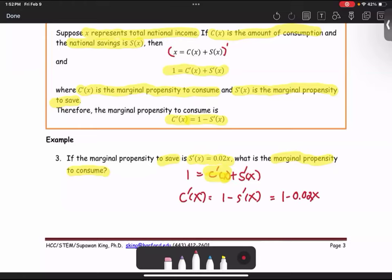These two terms are not like terms. We already get the answer in the form of 1 minus 0.02X as the marginal propensity to consume.